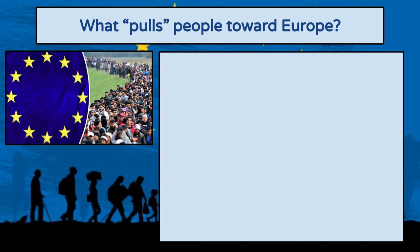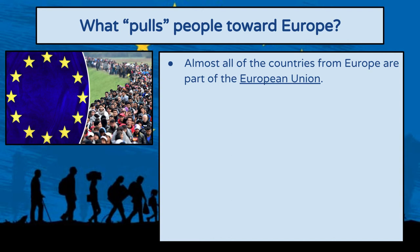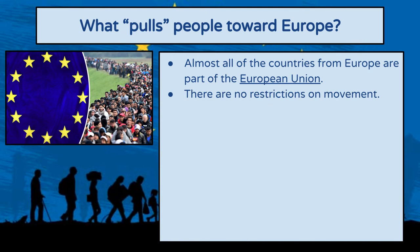We're going to look at three different countries and regions. First is Europe, which is a destination of choice for many immigrants. On this slide we'll look at what pulls people towards Europe. Almost all of the countries in Europe are part of the European Union, which is a big deal. In many ways European countries function like countries, and in other ways they function more like states. If you are a citizen of any European Union country, you have the right to live and work in any other EU country — there are no border controls, no stops at the border; you just drive across.